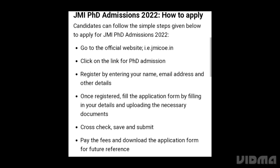How to apply: Go to the official website and click on the link for PhD admission. Register by entering your name, email address and other details. Once registered, fill the application form with your details and upload the necessary documents.